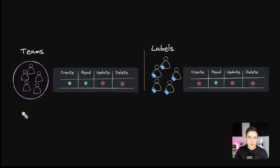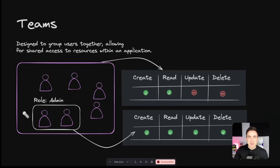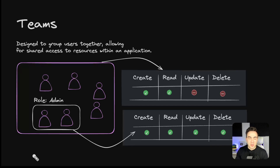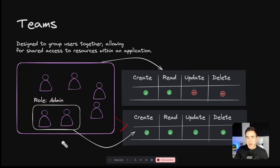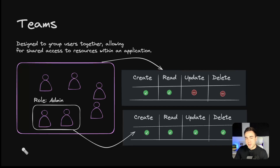Teams are designed to group users together for shared access to resources. Applications like Discord or Slack are great examples where teams thrive. A key difference with teams is the ability to set roles within a team and assign permissions to those roles. All users inherit permissions from the team — such as read access to all messages — but also inherit permissions from their specific role. For example, a moderator could be given permission to delete other users' messages while everyone else only has read and write.